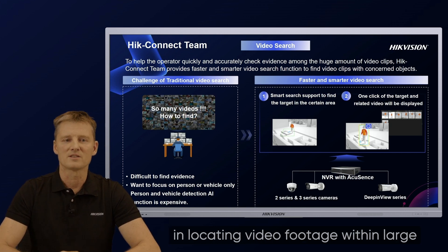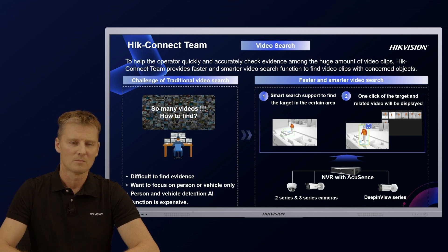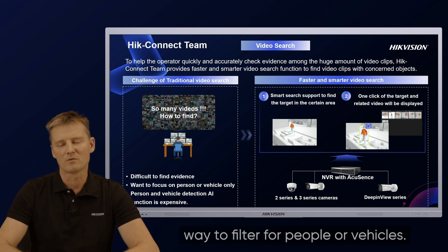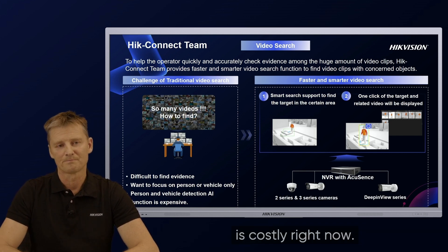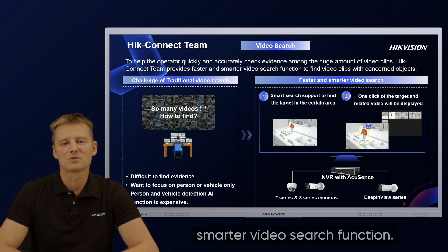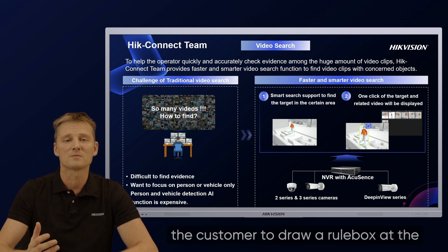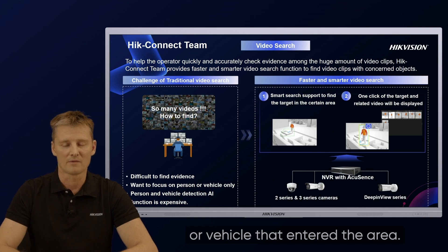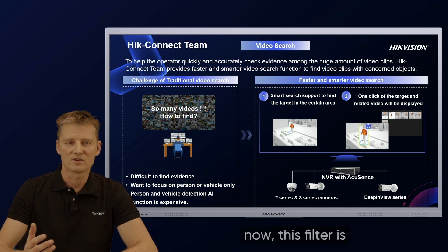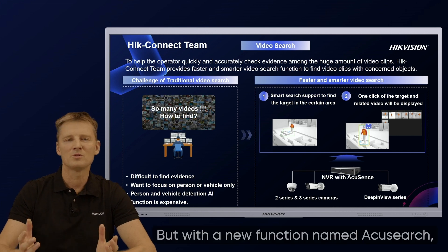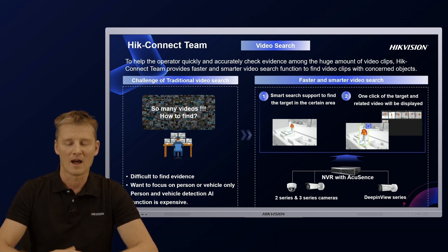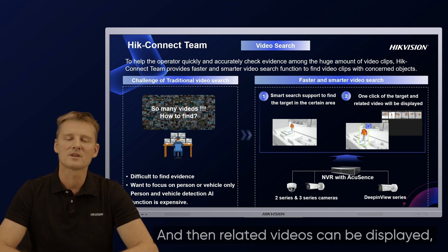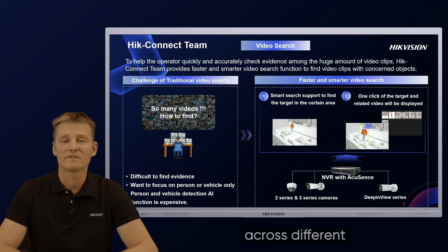Traditional monitoring faces challenges in locating video footage within large volumes of recordings. Manual searches using timestamps or tags are time-consuming, and there is no easy way to filter for people or vehicles. Moreover, implementing AI-based detection is costly. HiConnect team provides a faster and smarter video search function. The smart search function helps the customer draw a rule box at the location where the event happened, then find the human or vehicle that entered the area. Those familiar with Hikvision know this as AccuSense, but with the new function named AccuSearch, we're going further. AccuSearch helps users search specific targets of interest precisely within just one click, and related videos can be displayed, greatly improving search efficiency across different cameras and different NVRs.